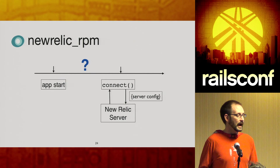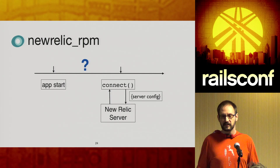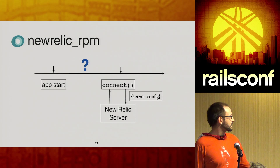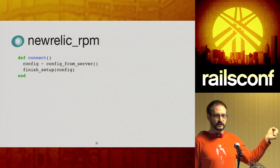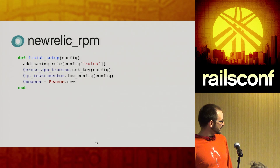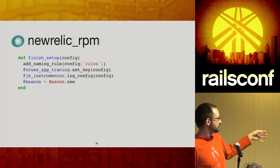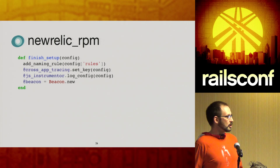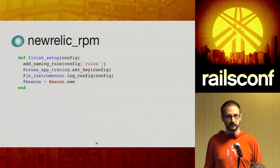Later on we added server-side configuration. The application now connects to our server and gets back some additional set of configuration values. This means the point in time at which we could assume the application was actually configured changed. If we'd put a bunch of logic directly into app startup right there in initialize, we now didn't have the right answer for what the configuration was — we have to wait until that connect happens in the background. So let's look at what happened with that connect method. We make a call out to the server and get back some configuration, pass that along to finish_setup.